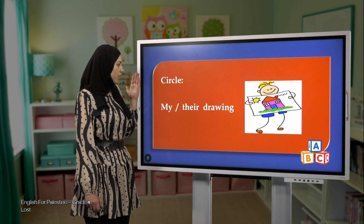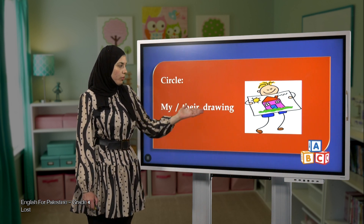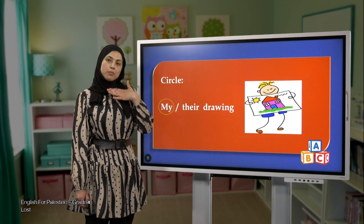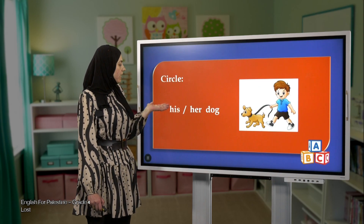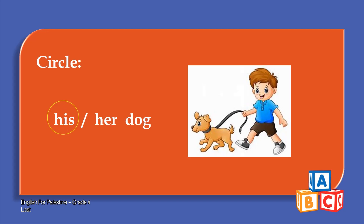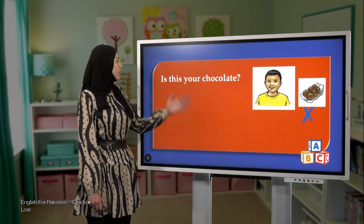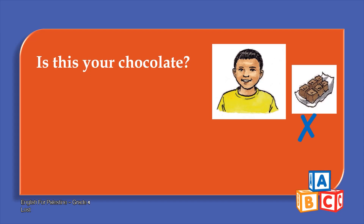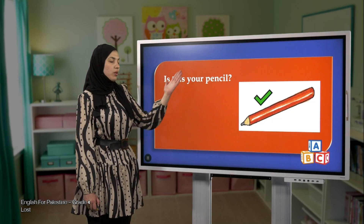Now let's circle correctly. My or their drawing? Yes, of course — my. His or her dog? He's a boy, so his dog. Is this your chocolate? No, it's his chocolate. Is this your pencil? Yes, it is.